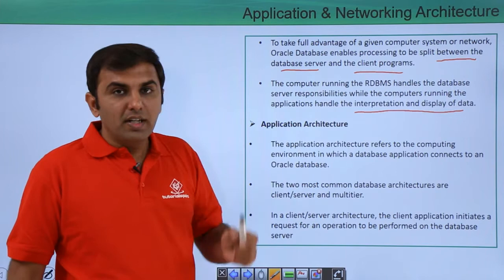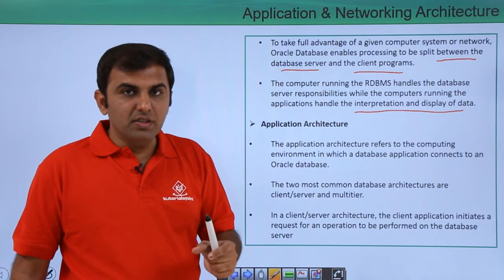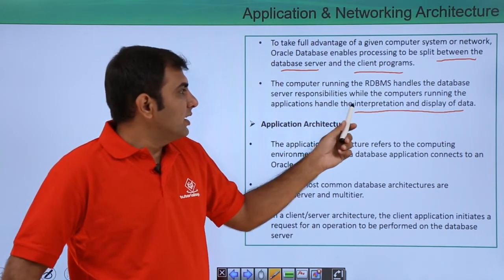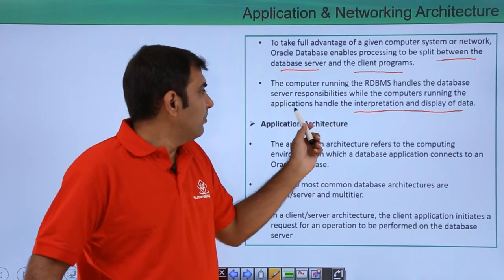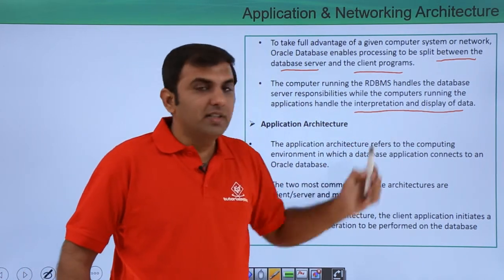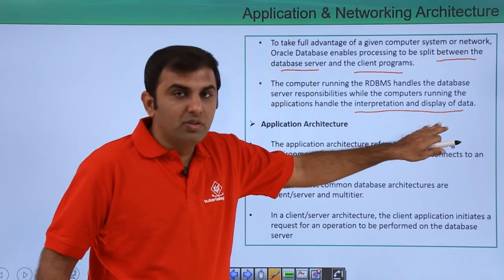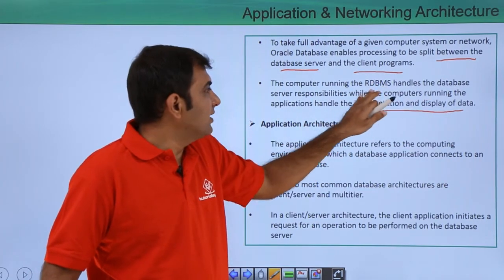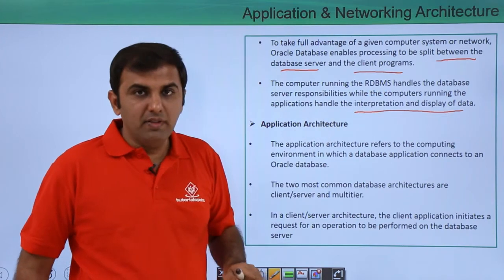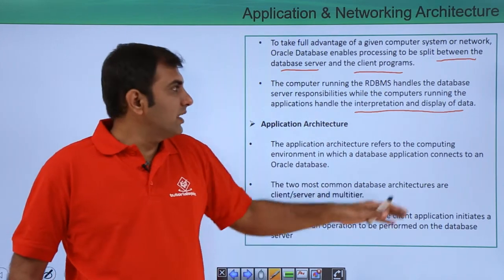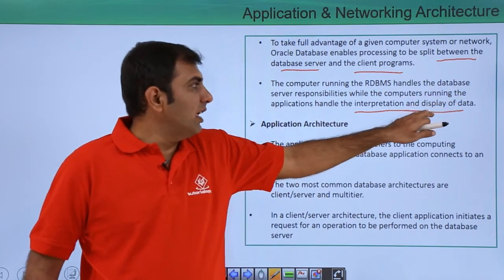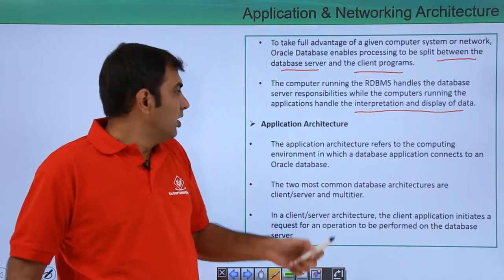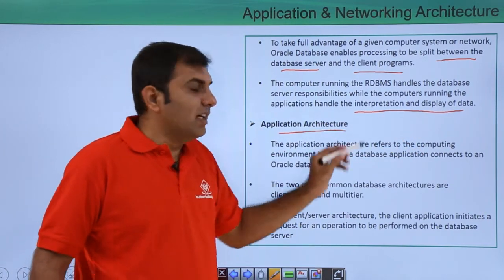So basically two things: the database and the application. The database server manages the server responsibility, and whatever data is required is taken from the database and given to the application. The application will just display the data. So first is your application architecture.